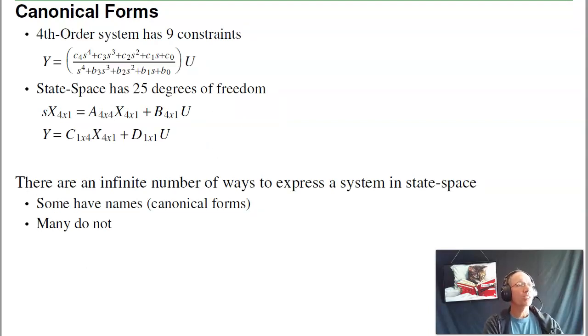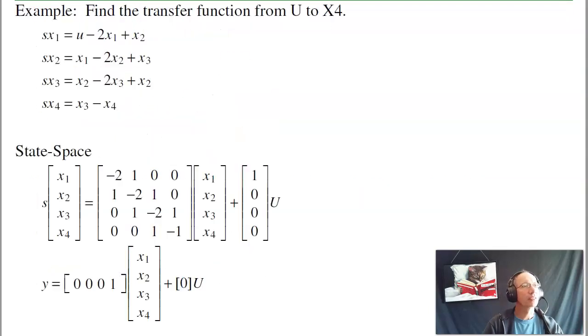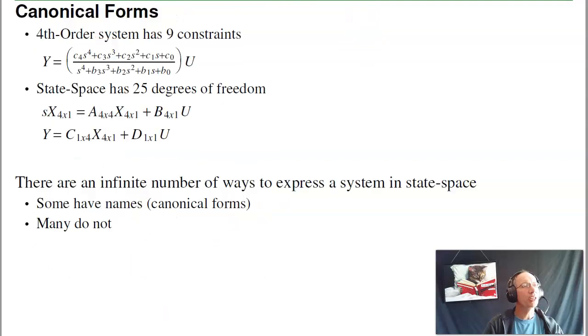In state space form, I can represent a system using matrices. If I have a fourth order system, I've got 16 plus 4 plus 4 plus 1, 25 degrees of freedom. A generic fourth order system only has nine constraints. That tells you there's an infinite number of ways to express the system in state space form. Some of those ways have names, the canonical forms. Many of them do not.